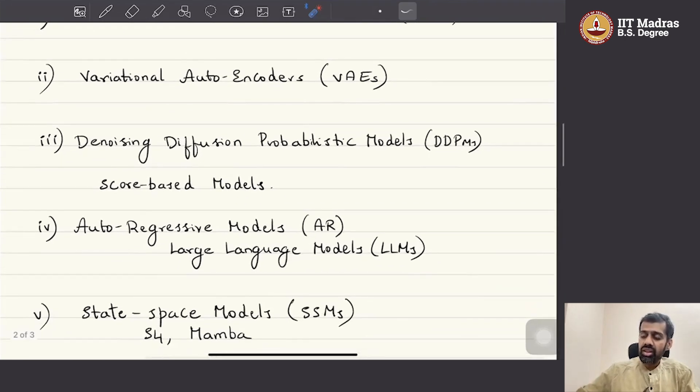Then, we will look at Denoising Diffusion Probabilistic Models, also known as Diffusion Models in short, abbreviated as DDPMs. These are the state-of-the-art models for several of the generative tasks such as conditional image generation that you might have seen in all the commercially available tools such as DALL-E and GPT that is capable of generating images. The underlying models that are working there are DDPMs or Denoising Diffusion Probabilistic Models.